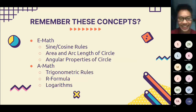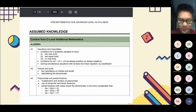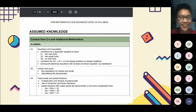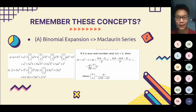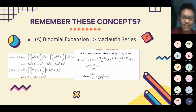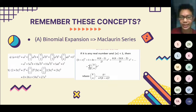For a full list of what H2 Math assumes as prior knowledge, search for the H2 Math syllabus document and scroll to page 15. There's also evolution of concepts — for example, from A-Math you'll remember binomial expansion. In JC this evolves into the Maclaurin series, which allows you to expand expressions when the power isn't a whole number — like fractions or negative numbers — which binomial expansion alone can't handle.